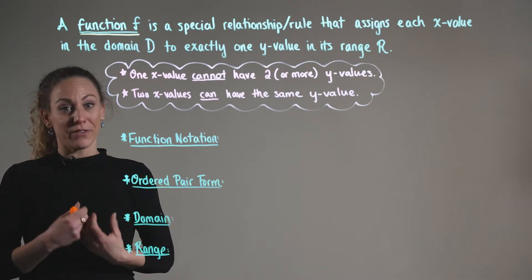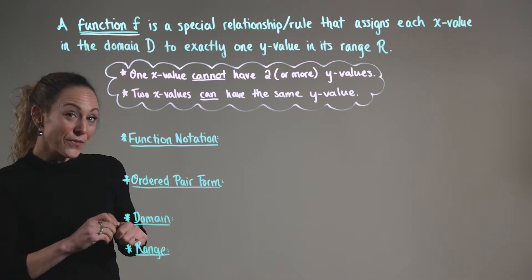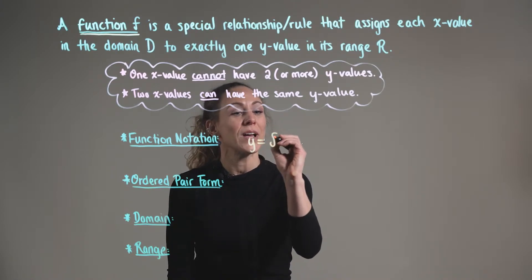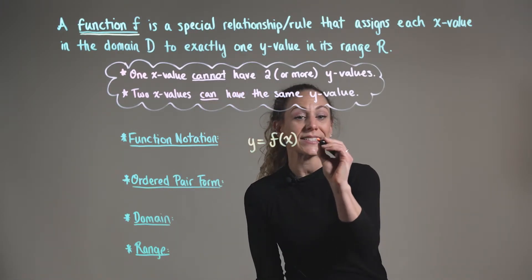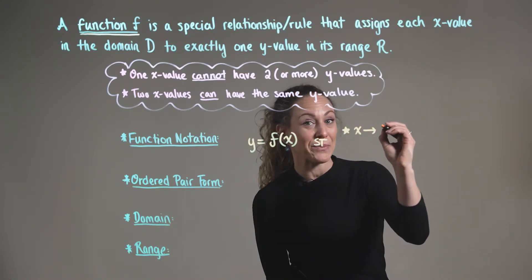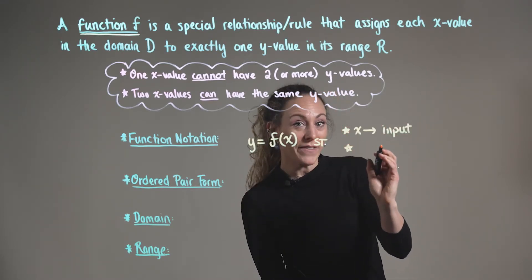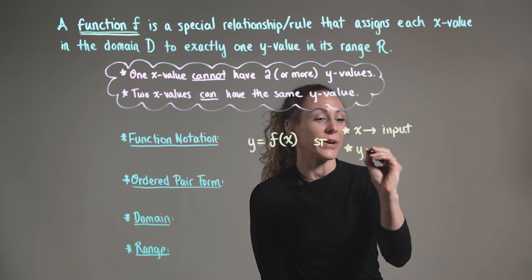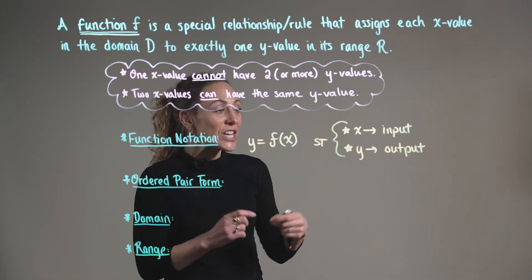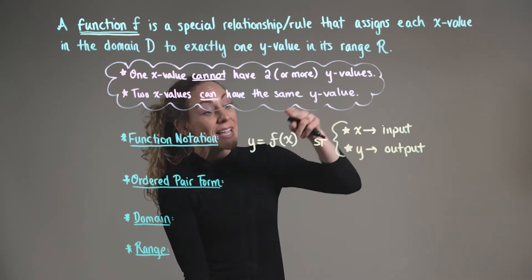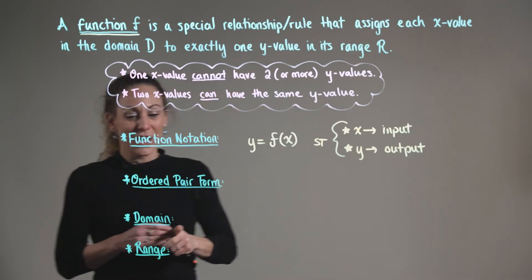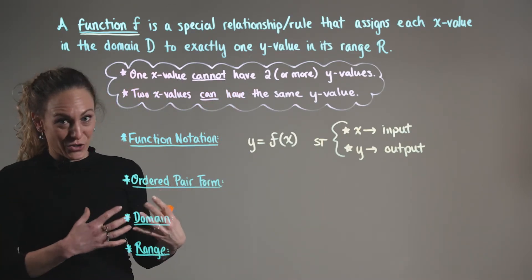Now, how do we denote a function? We use function notation: y equals f of x, where our x-value is called the input and the y-value is called the output. We can see from our function notation how we are putting this x-value into the function and out pops its corresponding y-value.